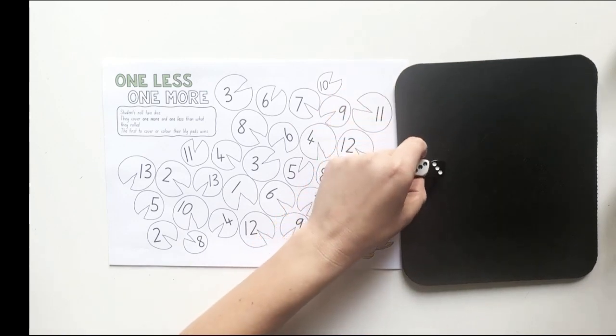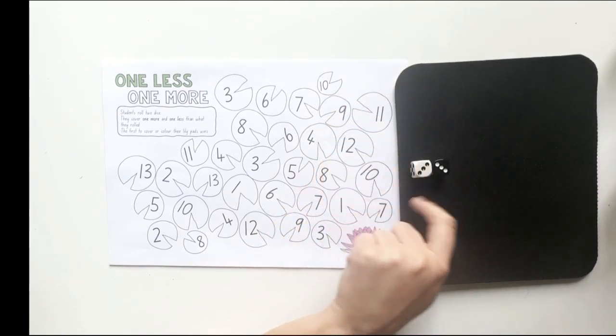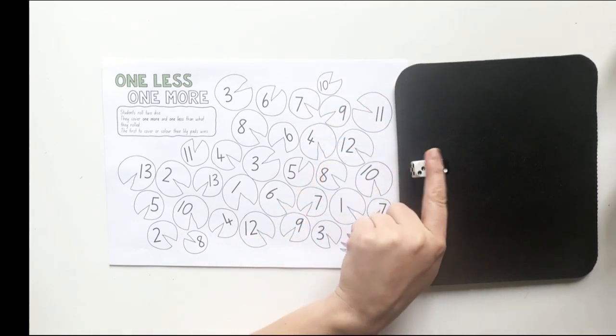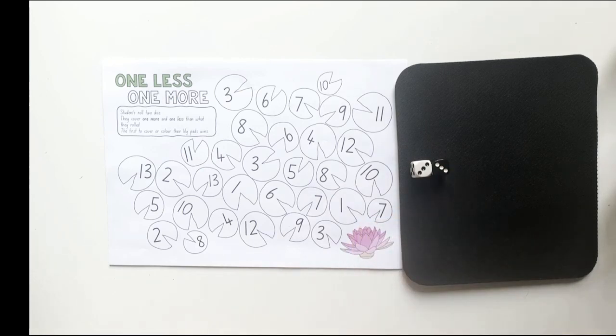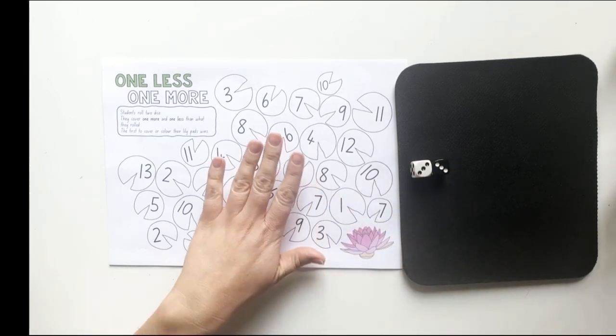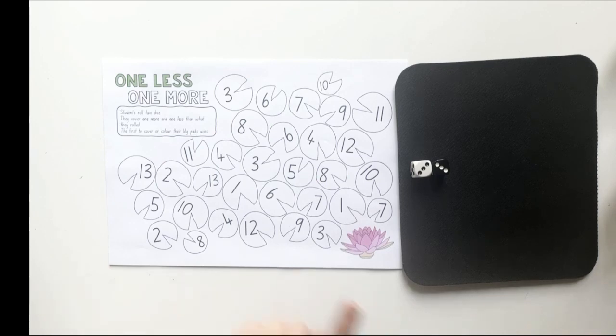I've rolled three and three. Together, if I combine these two numbers, three and three, I get six. Now, I'm not covering up six today. I'm covering up one less and one more of six.